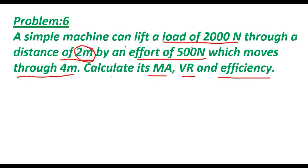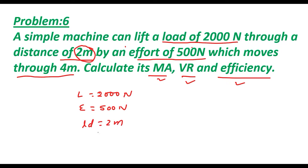In this problem we have to find the mechanical advantage, velocity ratio, and efficiency. We are given: load = 2000 newton, effort = 500 newton, load distance = 2 meter, and effort distance = 4 meter.